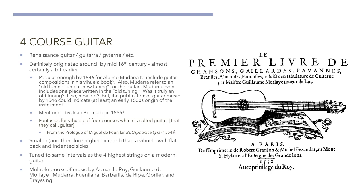Let's take a step past the viola and look at the origins of the guitar. The four-course guitar was well known by the middle of the 16th century. We know for a fact that it existed in that time frame. It was popular enough in 1546 for Alonso Madera to include compositions for it in his viola book. Interestingly, Madera referred to both a new tuning and an old tuning. Now remember, this is 1546. This begs the question: how old does it have to be in order for a tuning to be referred to as old?